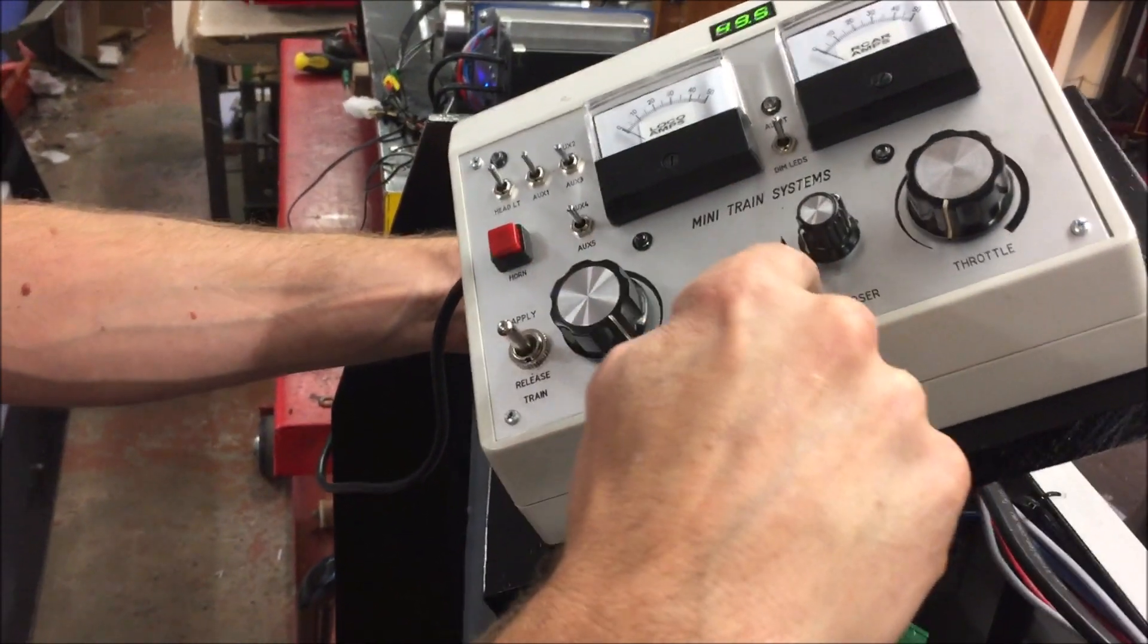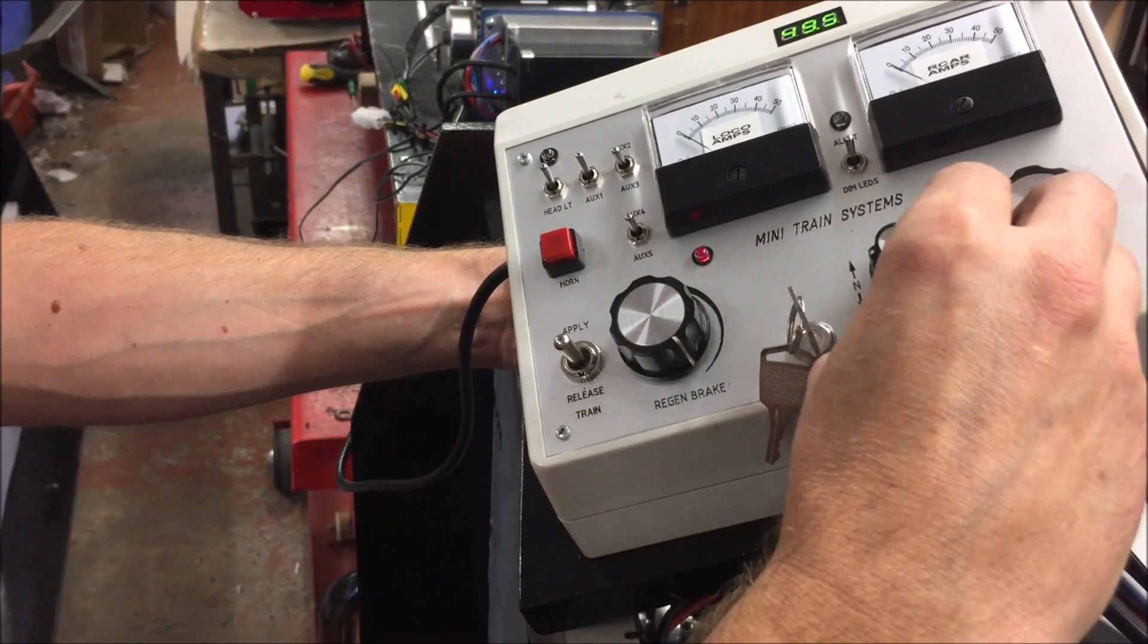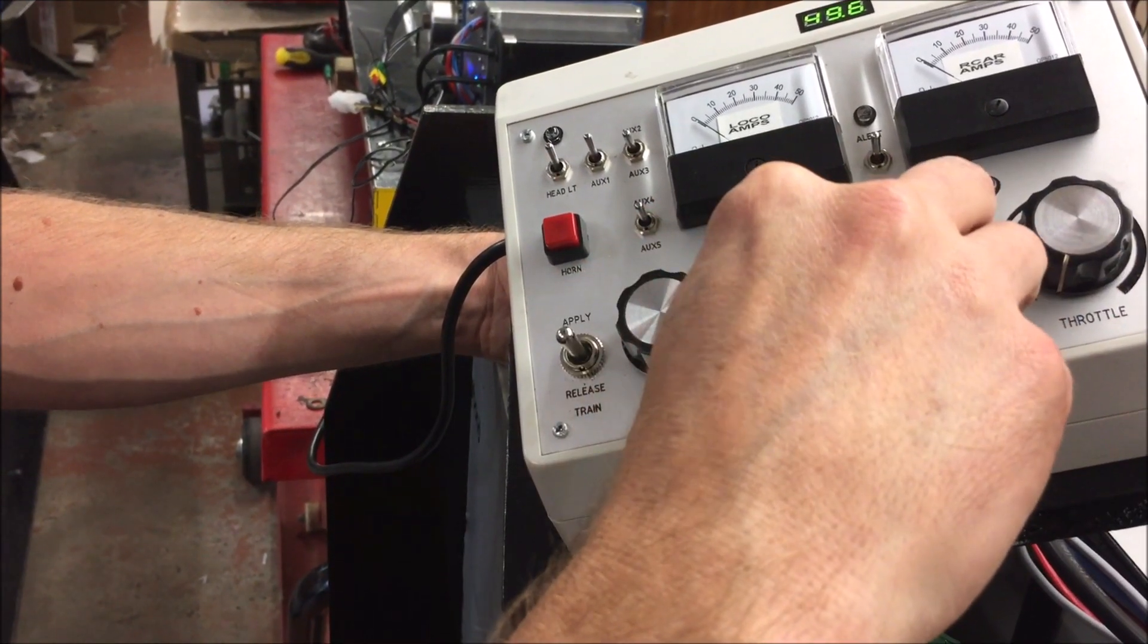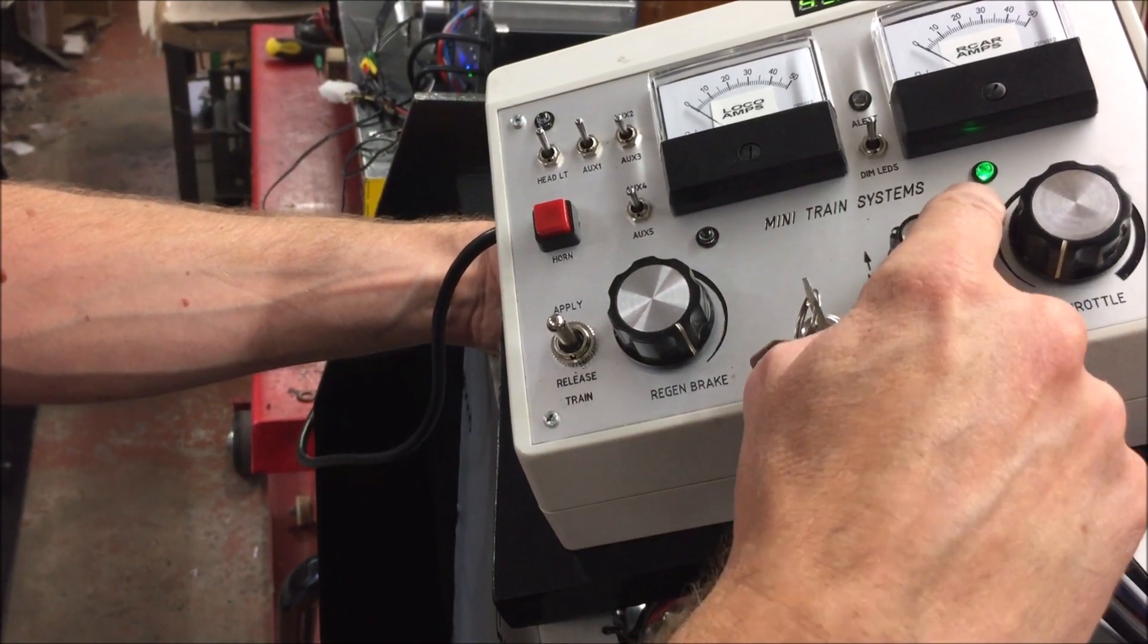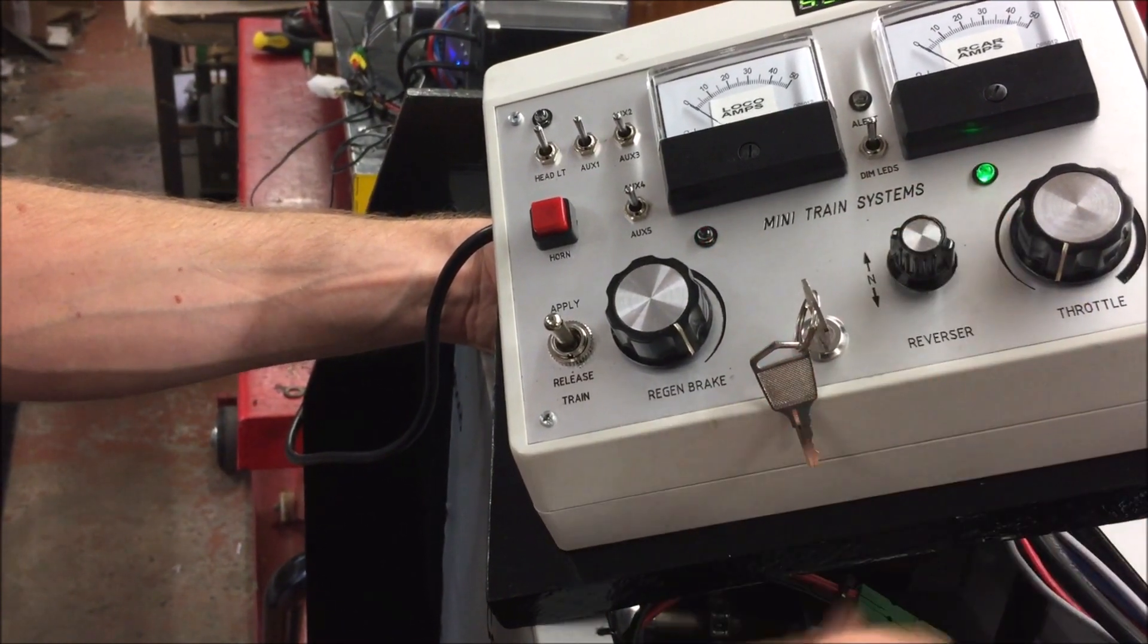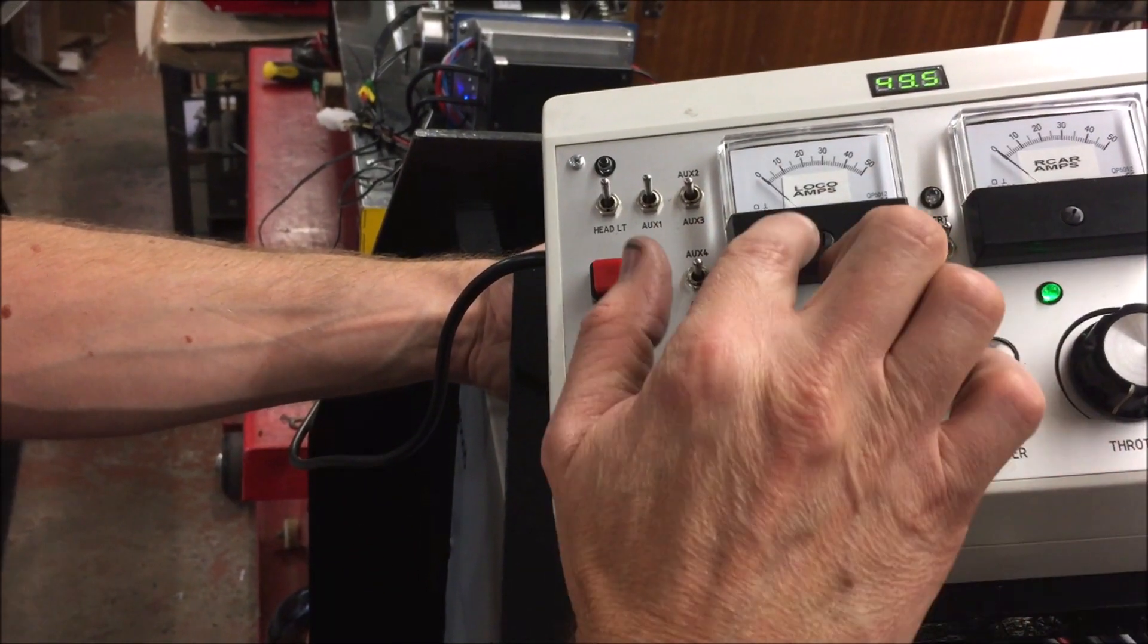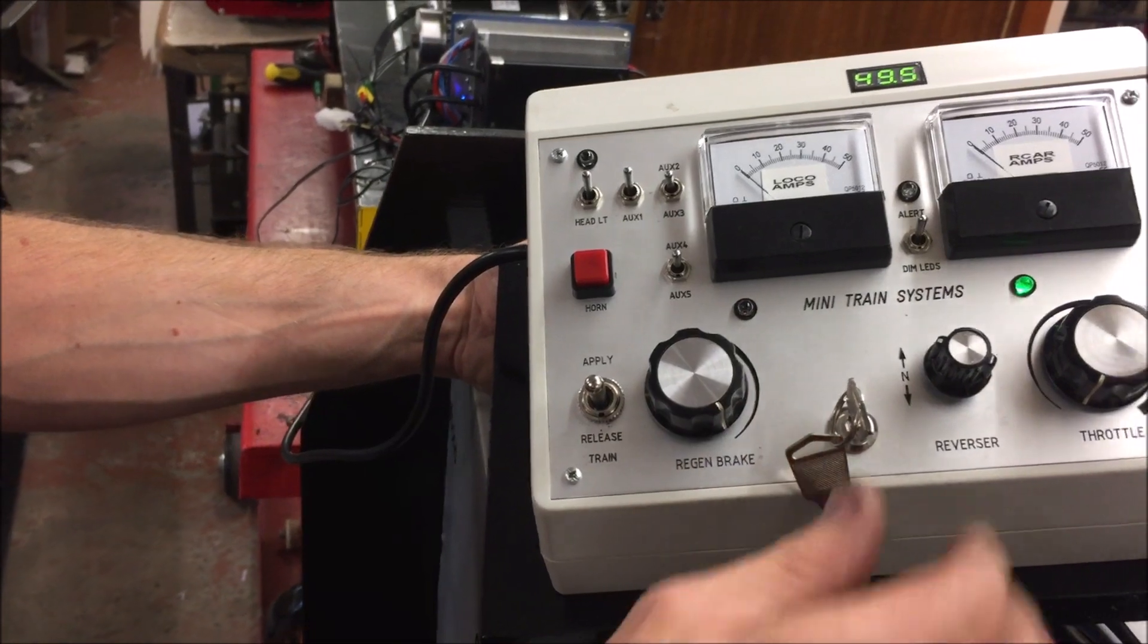It won't start if it's not in the neutral position. Key switch on, forward green LED, reverse green LED. The voltage on the top and the amperage that the loco is using and the wagons are using.